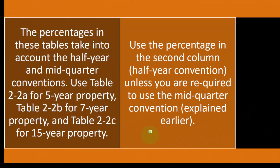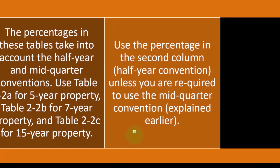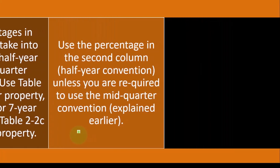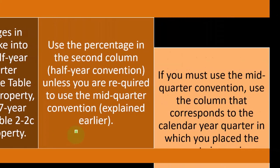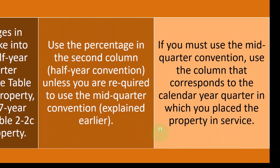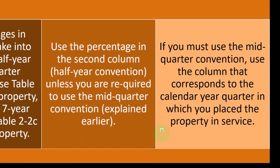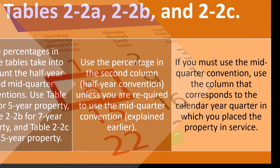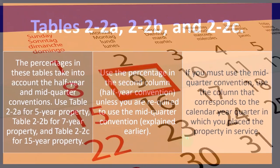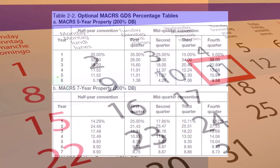Use the percentage in the second column — the half-year convention — unless you are required to use the mid-quarter convention, as explained earlier. If you must use the mid-quarter convention, use the column that corresponds to the calendar year quarter in which you place the property in service.